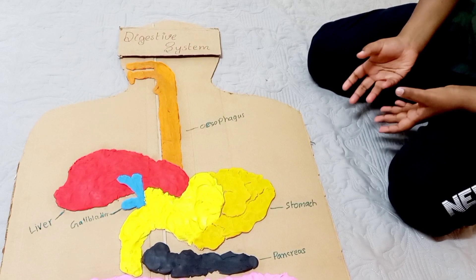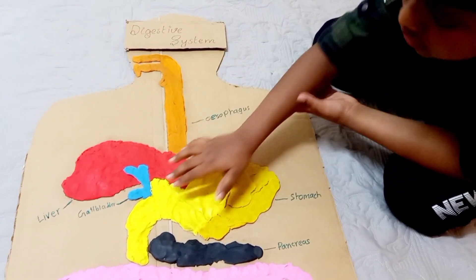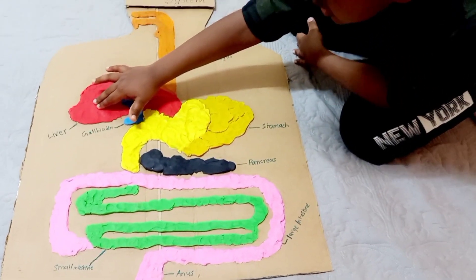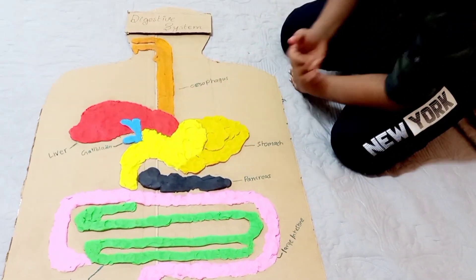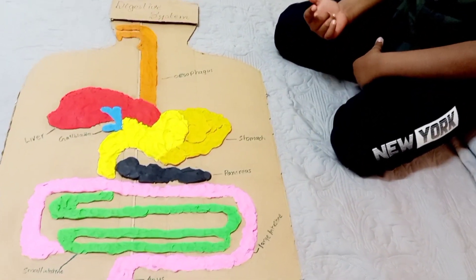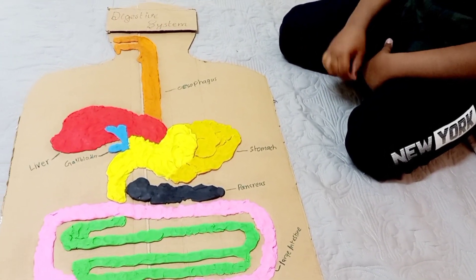The hollow organs that make up the GI tract are the mouth, esophagus, stomach, small intestine, large intestine, and anus. The liver, pancreas, and gallbladder are the solid organs of the digestive system.